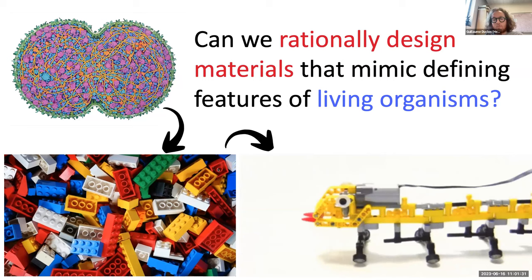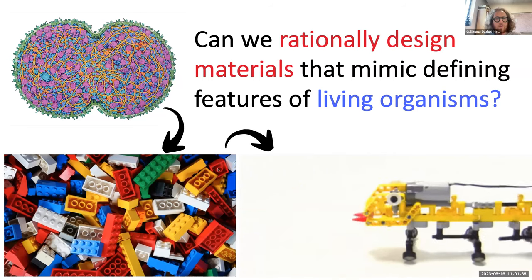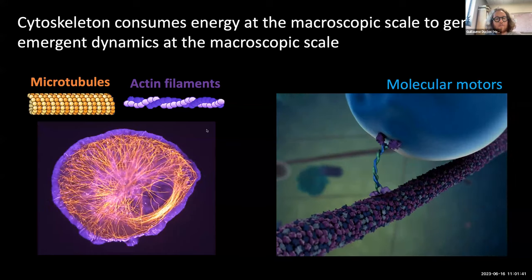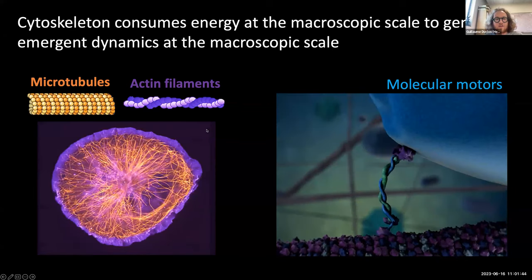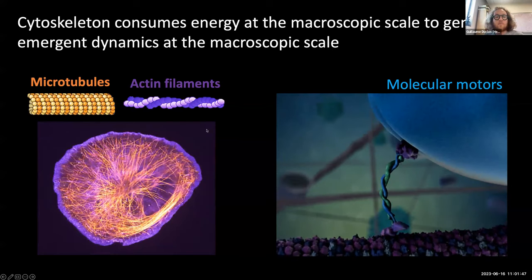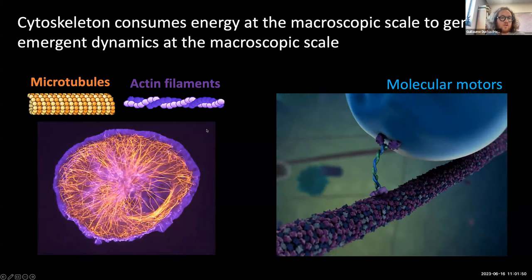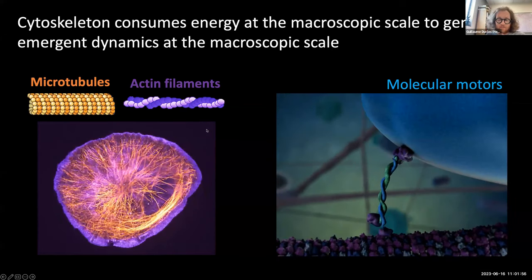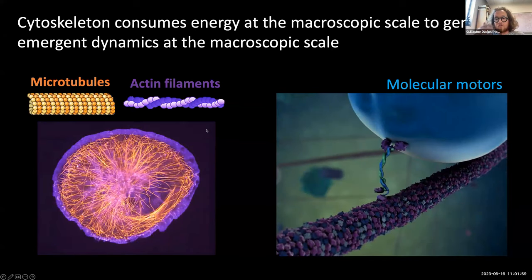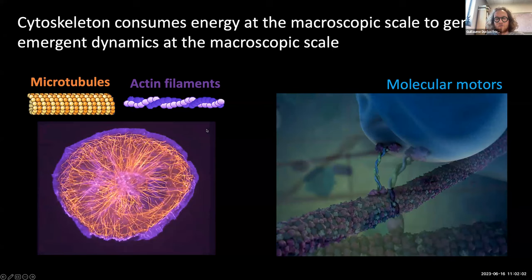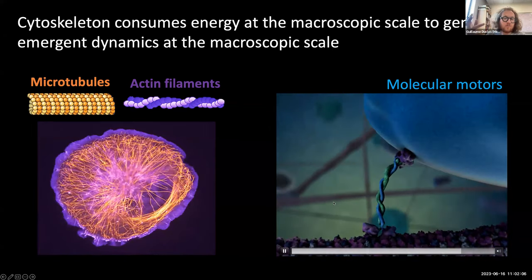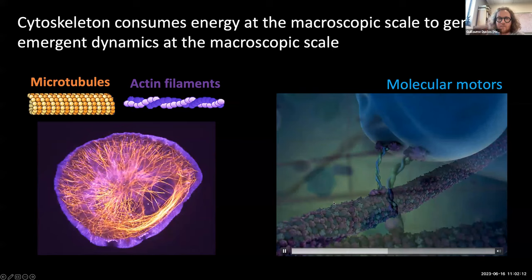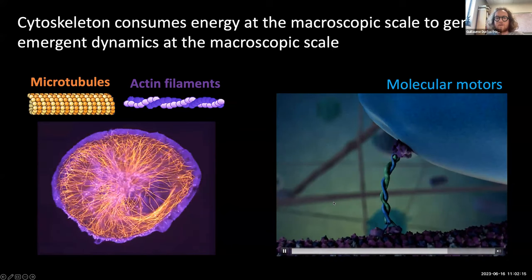In particular, the building blocks we're going to talk about are proteins that consume energy. One great model system to extract those proteins from is the cell cytoskeleton. The cytoskeleton is composed of proteins that form polymers like microtubules and actin, and the cytoskeleton really consumes energy at the protein scale to generate emergent dynamics and structure at the cellular or microscopic scale.